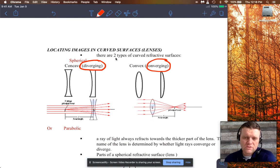So converging lenses are just like magnifying glasses. That's the easy example which you probably all played with.